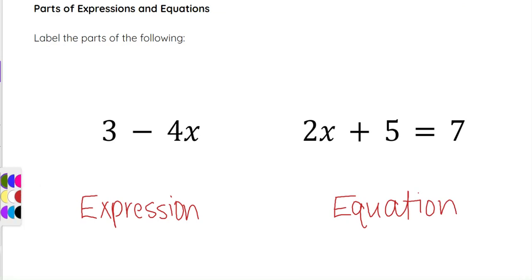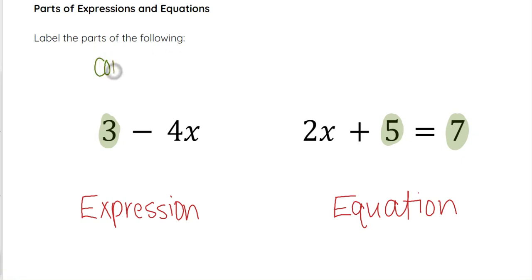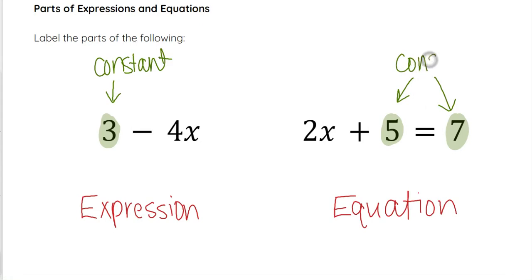Looking at some vocabulary: the 3 here — the number on its own — and the 5 and the 7 are all what we call constants. A constant is just a number that's on its own; it doesn't have a variable or a letter with it. It is literally just a number on its own.